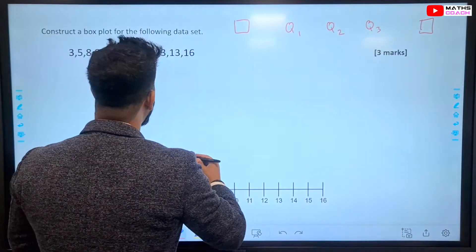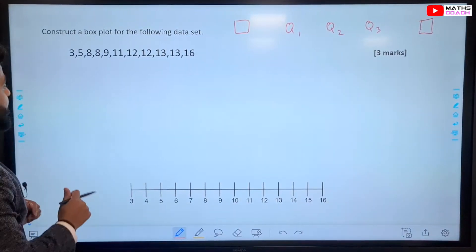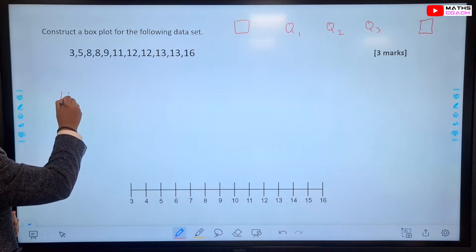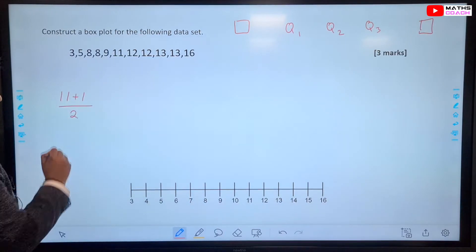To find the median, because this is a discrete group of numbers, we'll be adding 1. So, 11 pieces of data. So, 11 plus 1. And we'll divide that by 2.